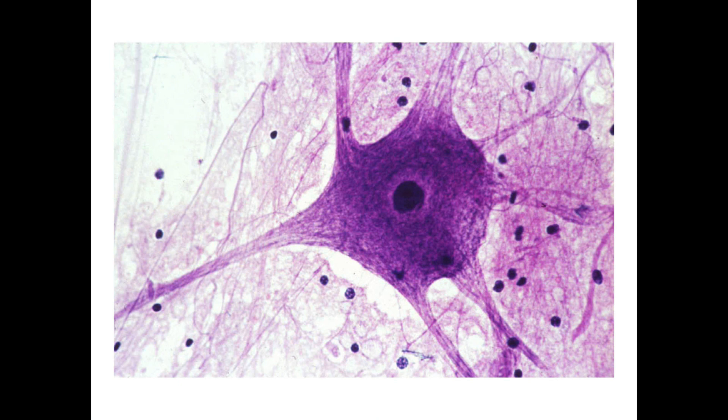Stellate means it has a starry shape, and you can kind of see the prominences as they stick out — it gives it a star-like appearance.